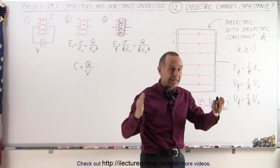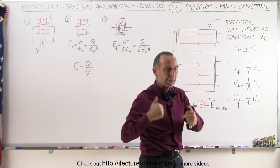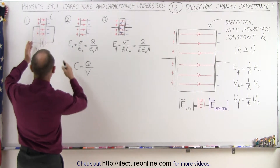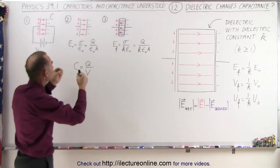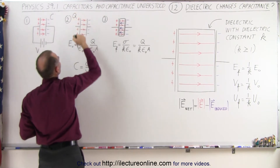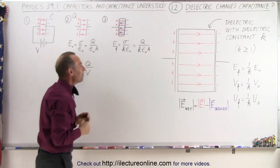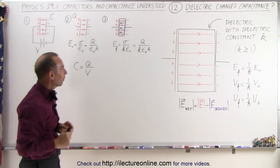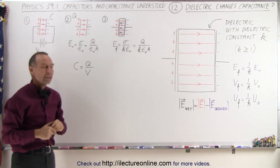The voltage between the plates gets reduced by the same factor, and the energy stored on the capacitor gets reduced by the same factor. All of that is provided you started with a capacitor hooked onto a battery so that charge was pushed onto the capacitor, and then you disconnected the battery, so that you ended up with a charge q on the capacitor, and then you inserted a dielectric with dielectric constant k. That's when we noted the changes to the electric field, the voltage across the plates, and the energy stored on the capacitor.